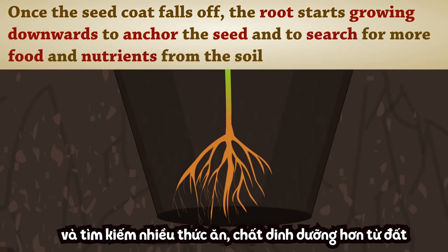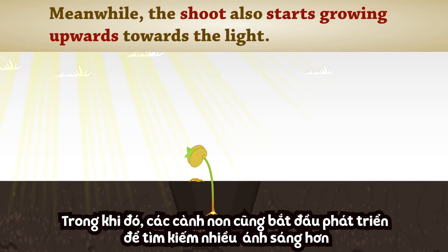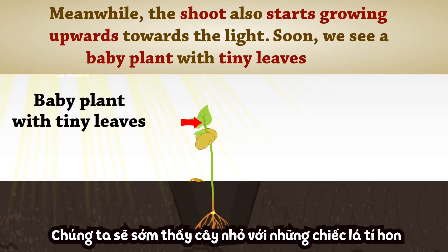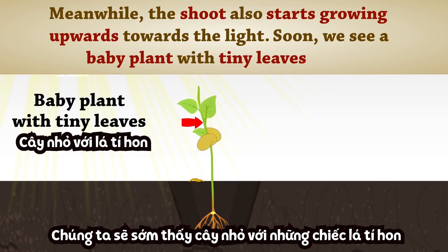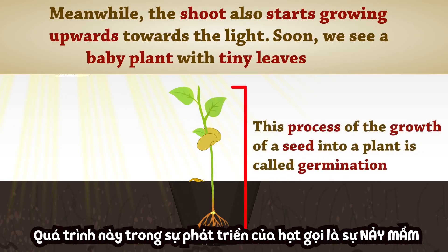The root grows downwards to anchor the seed and to search for more food and nutrients from the soil. Meanwhile, the shoot also starts growing upwards towards the light. Soon we see a baby plant with tiny leaves. This process of the growth of a seed into a plant is called germination.